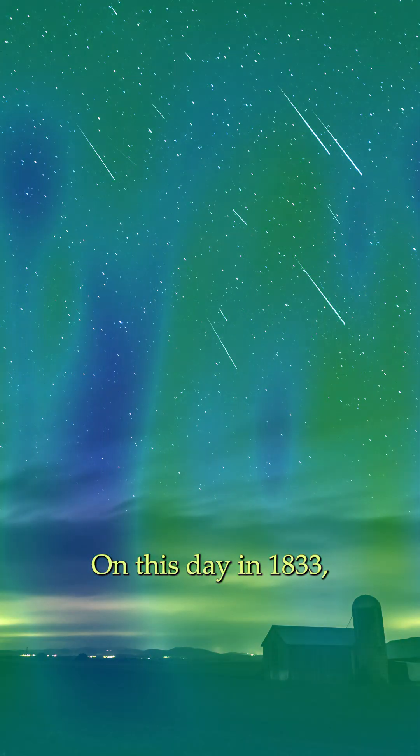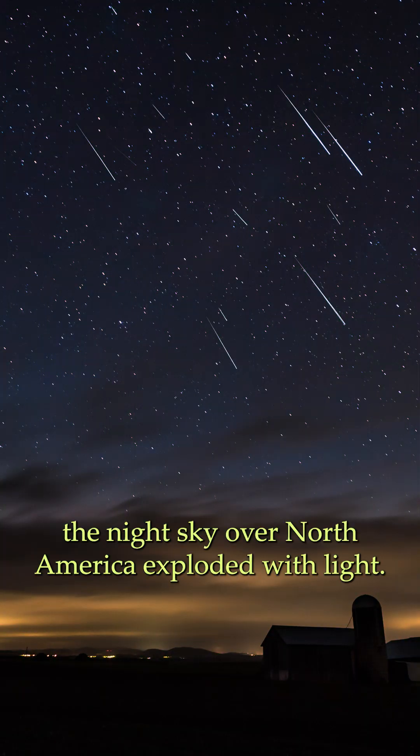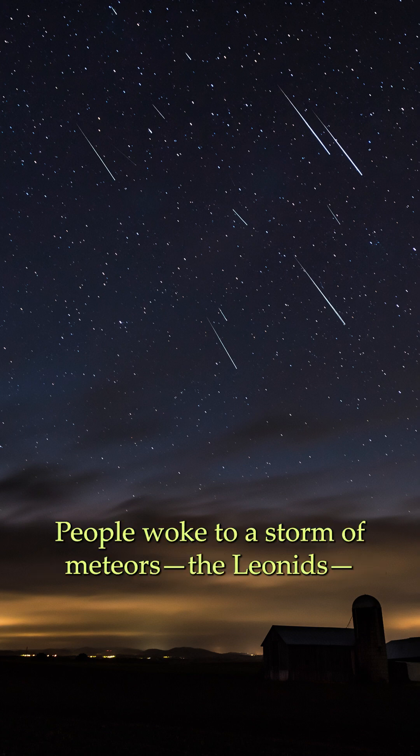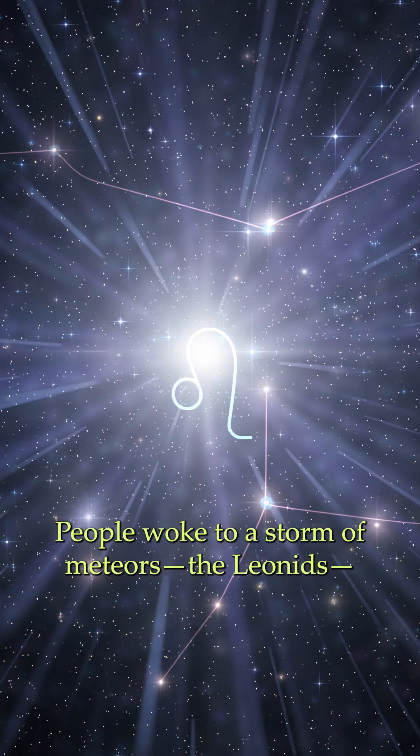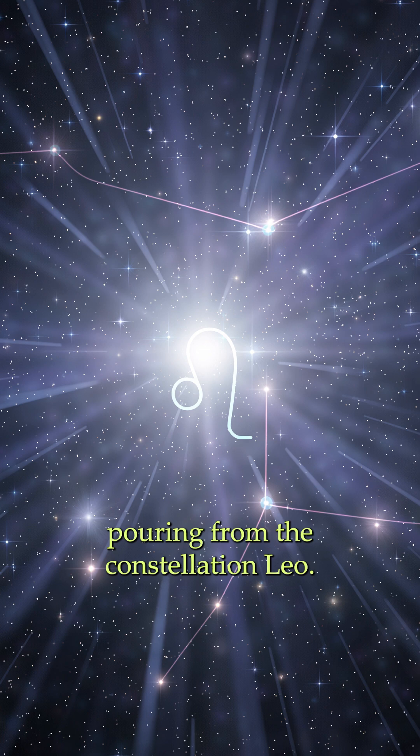On this day in 1833, the night sky over North America exploded with light. People woke to a storm of meteors, the Leonids, pouring from the constellation Leo.